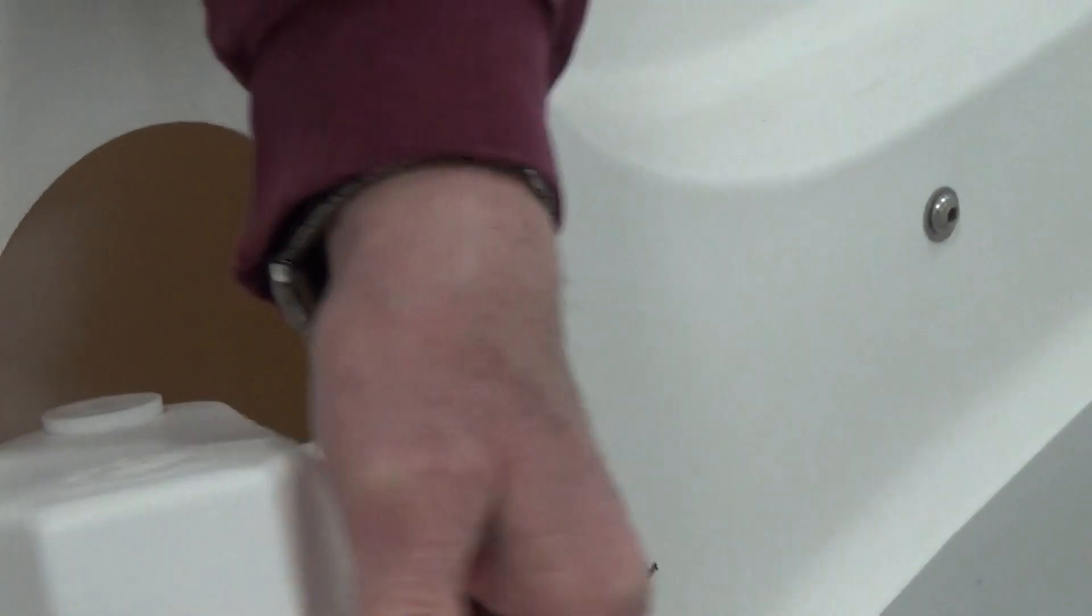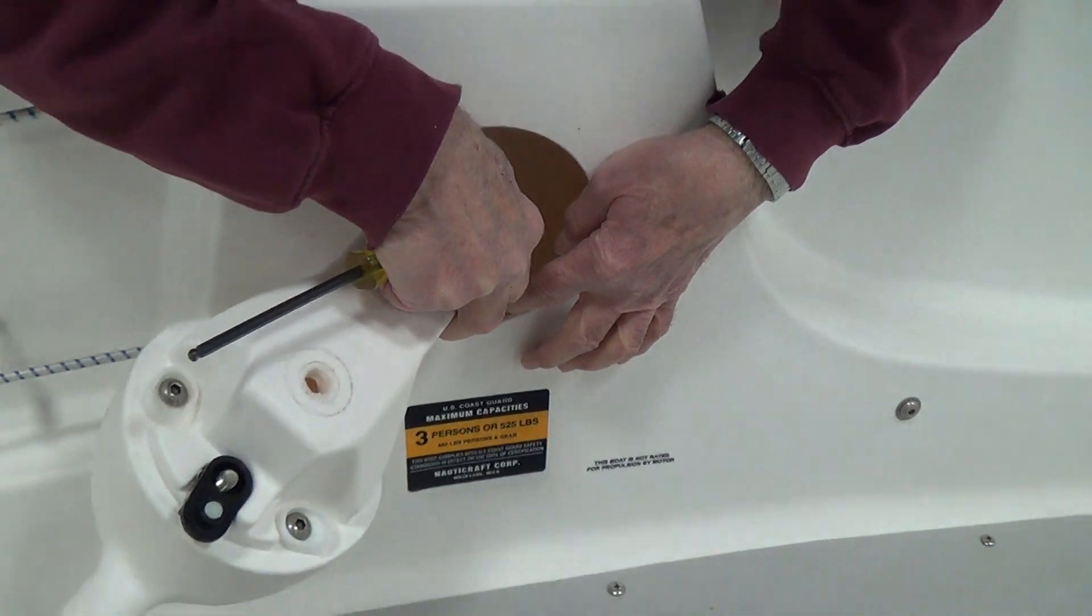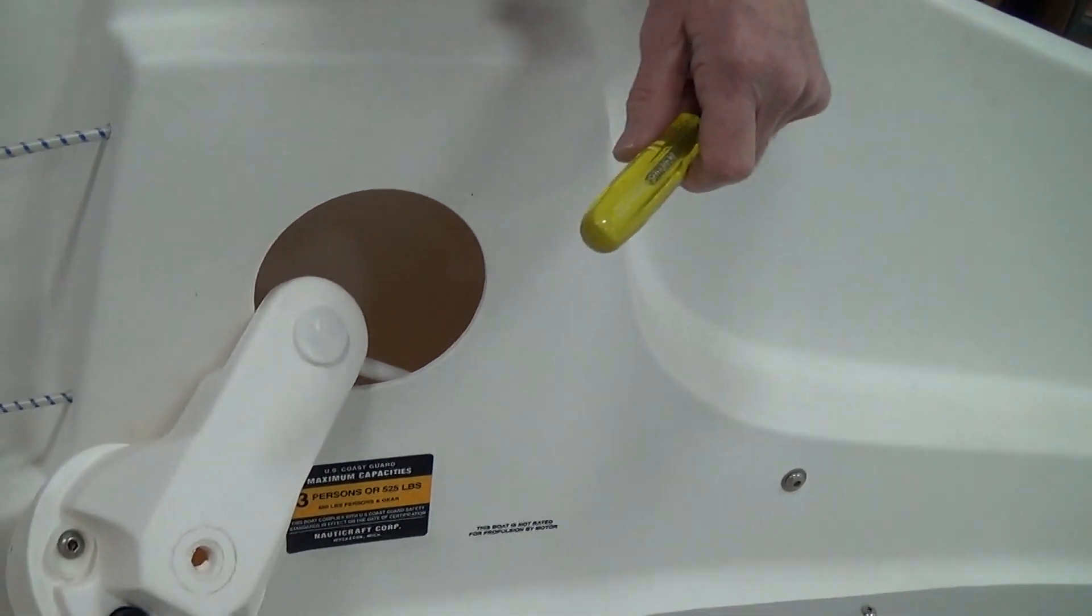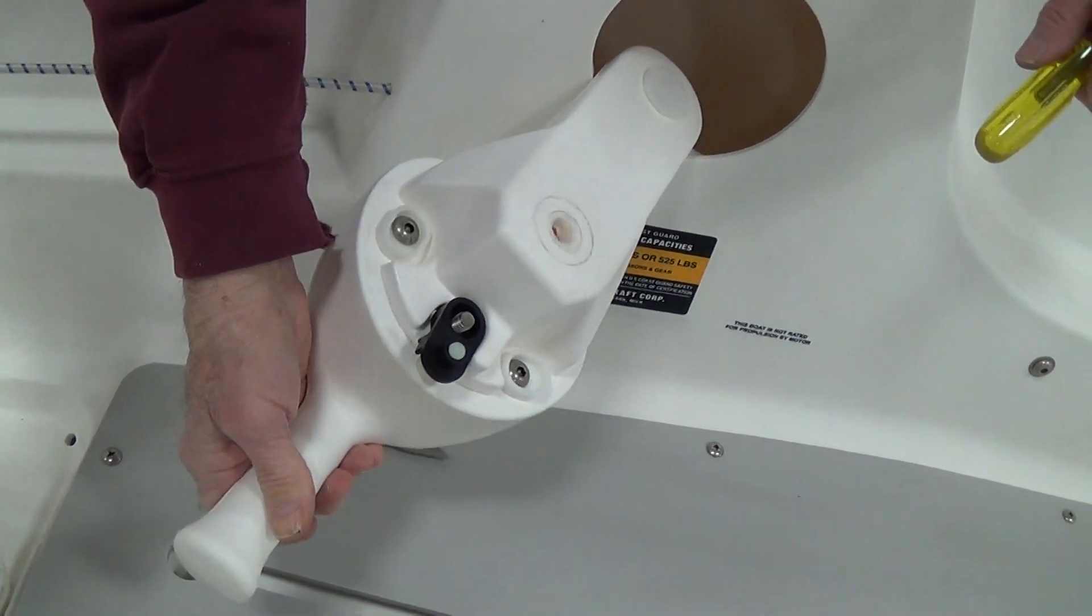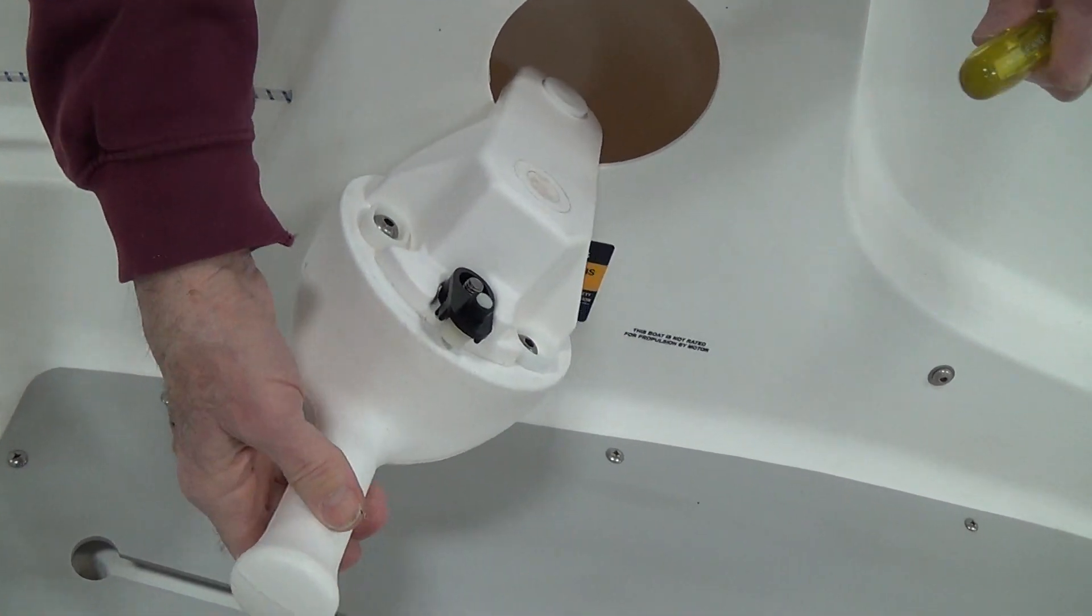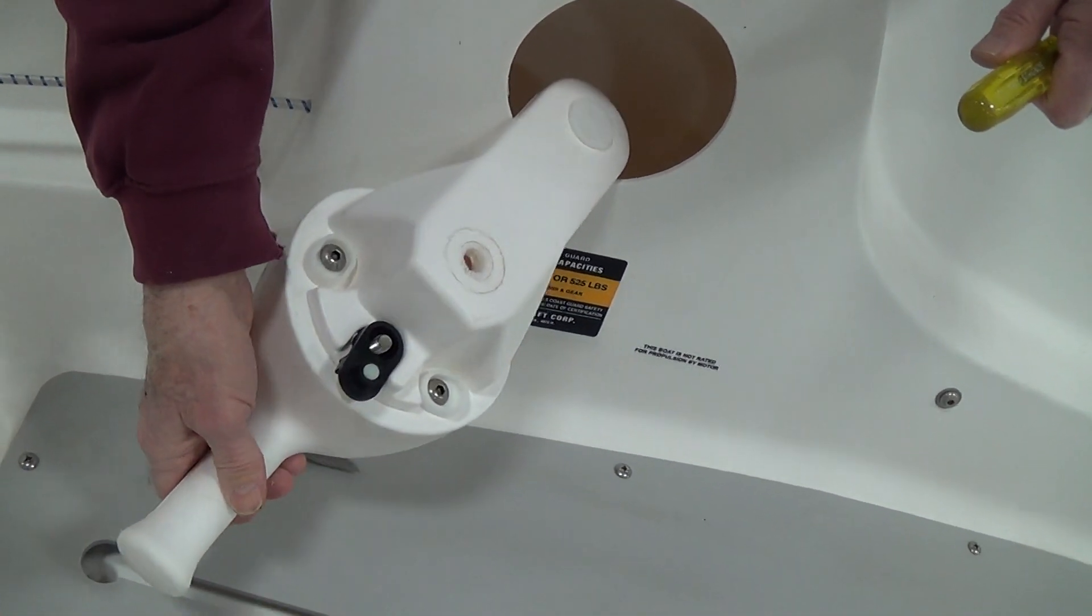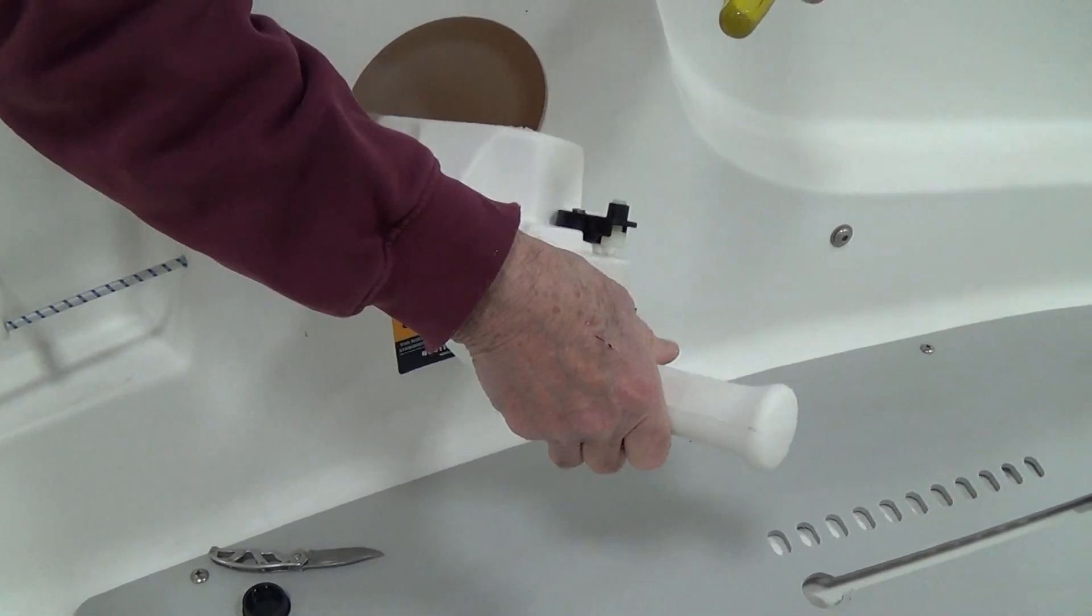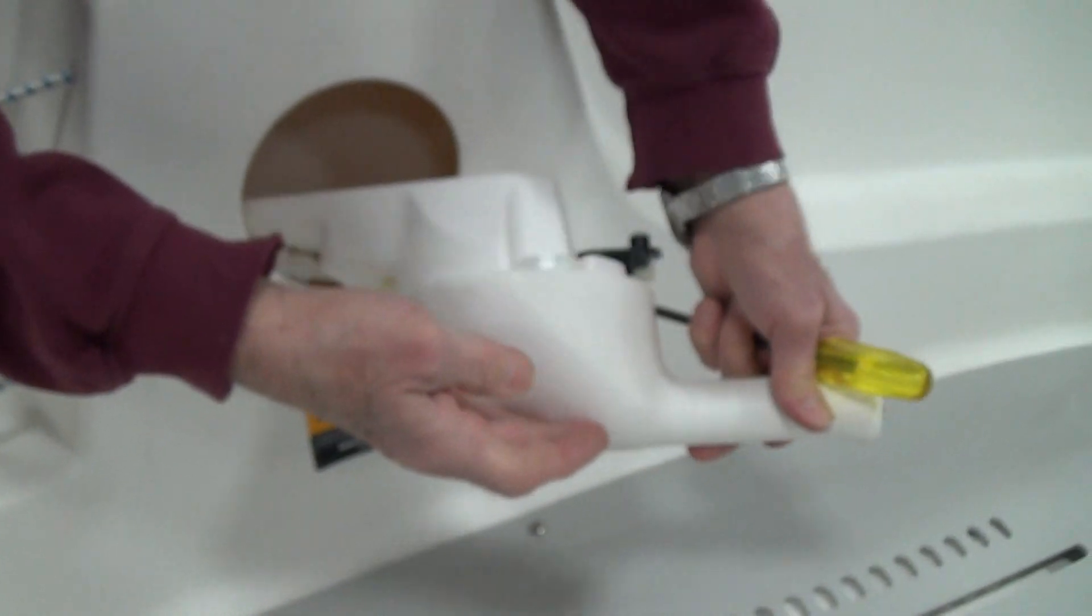This is the steering handle. You can pull this up out of here. This is connected to the steering rod, which goes to the back of the boat, and ultimately steers the rudder. So for whatever reason that you have to put this in and take it out, that is the way that you do it.